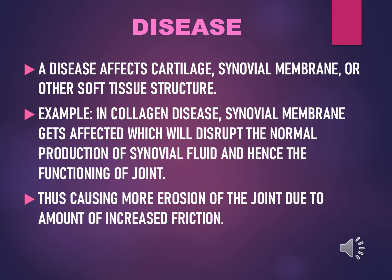In osteoarthritis, the most commonly affected structure is the cartilage. The cartilage is unable to provide support to the joint, causing more wear and tear and an inability to handle the stress placed on the joint. As we have read earlier in the creep and stress-strain curve, muscles and ligaments tend to lose their elasticity, reach the plastic region, and ultimately fail. This is why we need to understand how to make our joint structures more efficient and stronger.